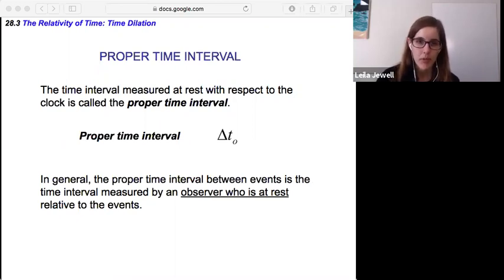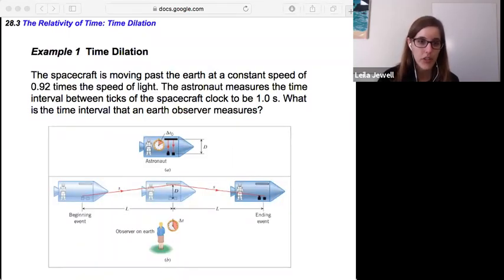So let's get some numbers with this. So it's a little bit less abstract because this is a lot of terminology to throw around. So first, we'll stick with this astronaut example. The spacecraft is moving past the Earth at a constant speed of 0.92 times the speed of light. Whew, super fast. The astronaut measures the time interval between ticks of the spacecraft clock to be 1.0 seconds. What is the time interval that an Earth observer measures? Now remember, astronaut's traveling through space, so they should, right with the clock, so they should measure a shorter time.